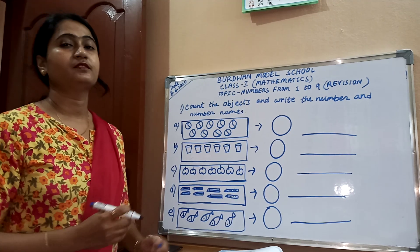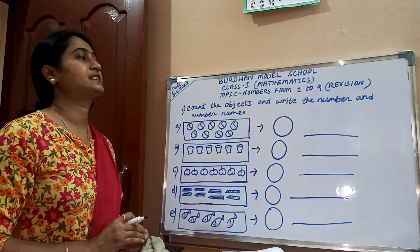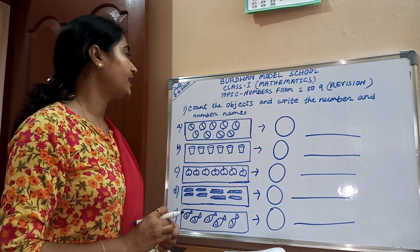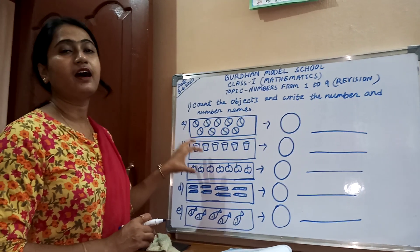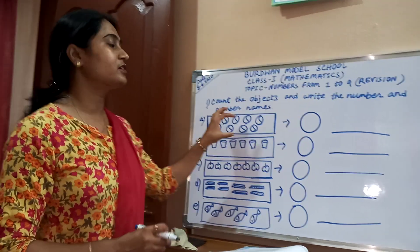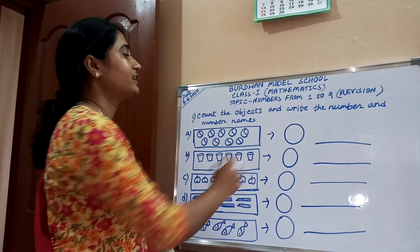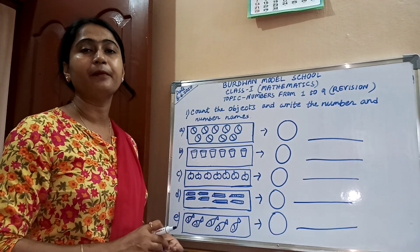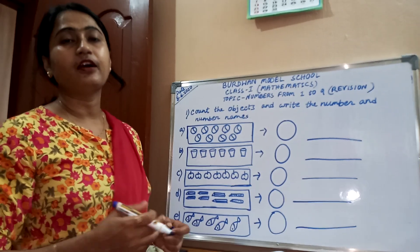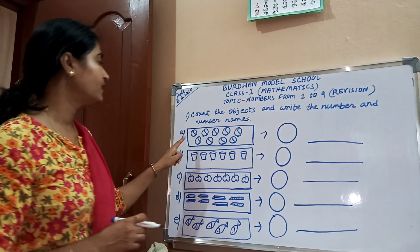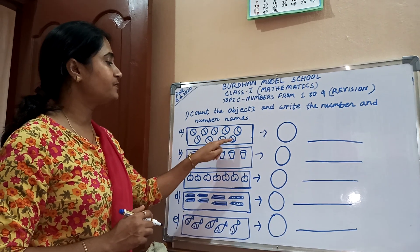Check your copy. Write down: first, count the objects and write the number and number names. You have to count the objects — I have drawn some pictures in boxes. Count the objects, write the number in the circle, and thereafter write the number names.